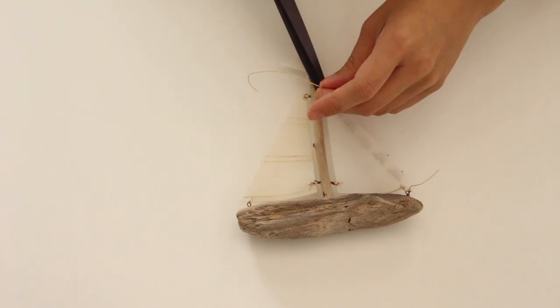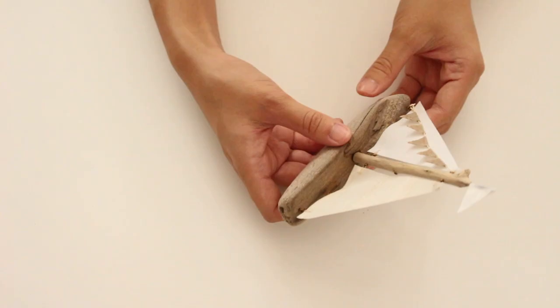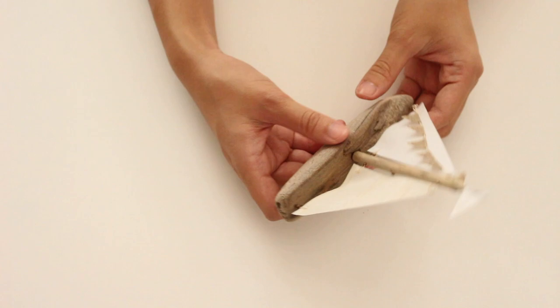I added a dot of glue over each knot to secure it and painted a heart on the boat.